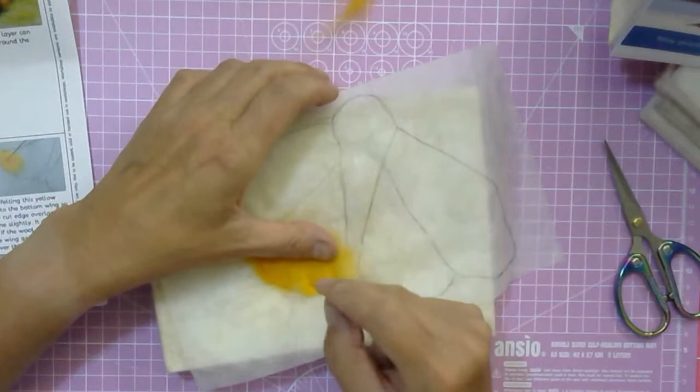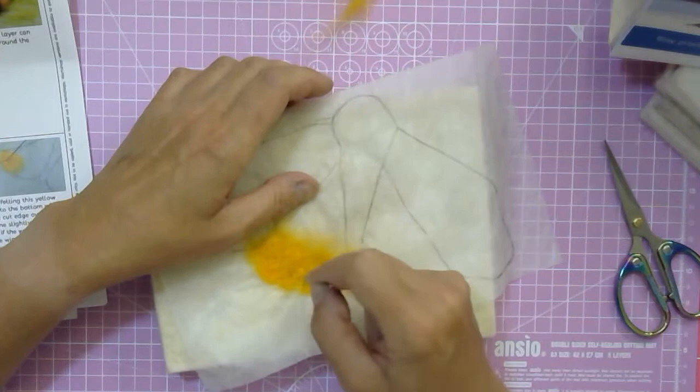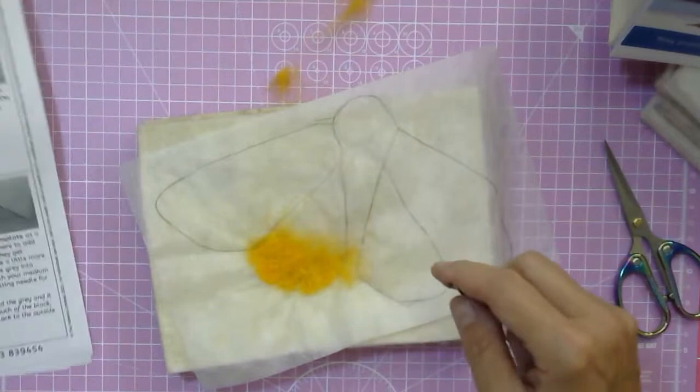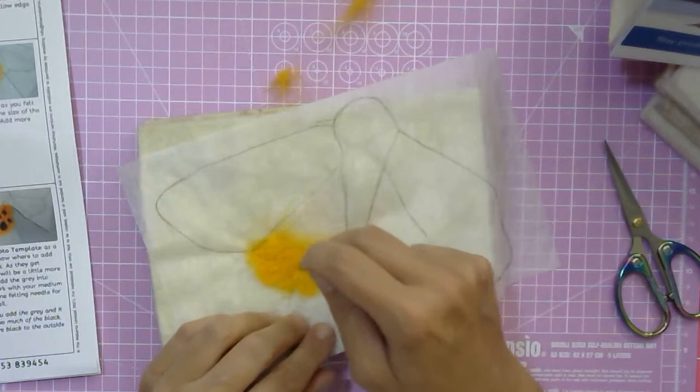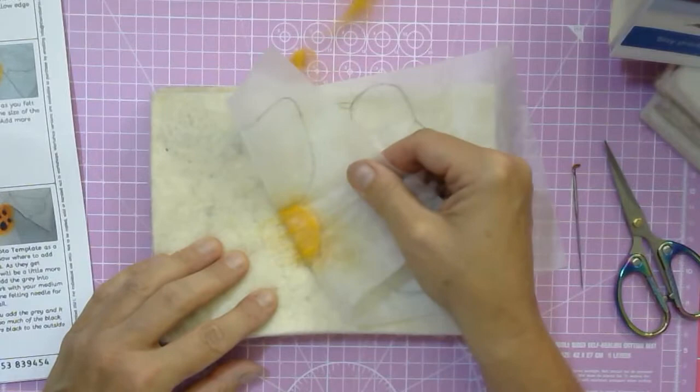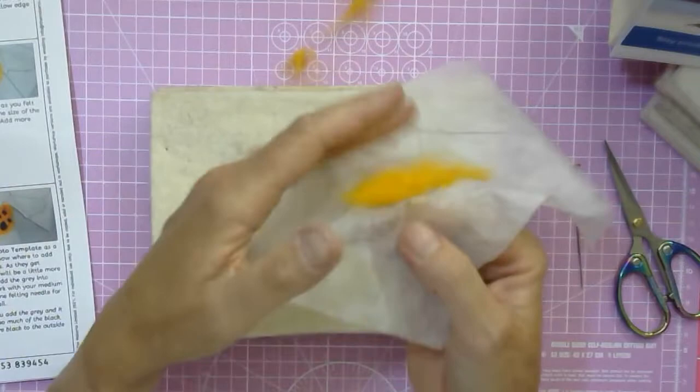Whenever you're needle felting onto water-soluble paper into a felting mat, you do need to make sure that you lift your work off regularly. That goes for the whole of the project. So you need to lift it off regularly to prevent it from fastening onto the mat.